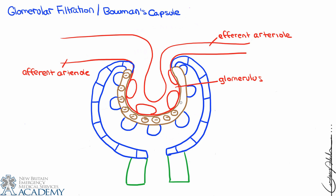The glomerulus is surrounded by some epithelial cells, and anytime we have epithelial cells we also have a basement membrane. The basement membrane is nothing more than a thin layer of non-cellular material secreted by the epithelial cells connected to it. The basement membrane noticeably has a negative charge, which will be important when we discuss filtering.